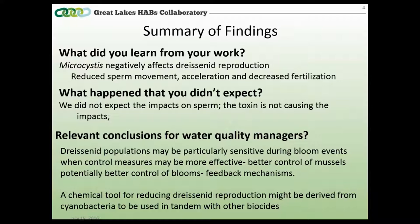This is important because, while we can't use an identified chemical as a major control mechanism on its own, it can enhance other control mechanisms and deepen our understanding of bloom chemistry. There's also a feedback loop: mussels selectively feed on healthy green algae and thereby enhance cyanobacteria blooms through nutrient dynamics. So controlling mussels would have a feedback effect of potentially reducing the severity of HABs events, and using this mechanism in tandem with other biocides could be a very effective approach.